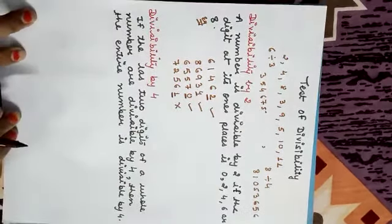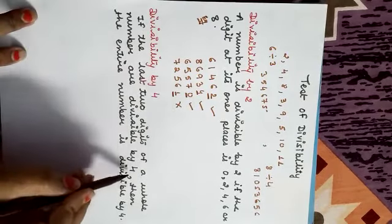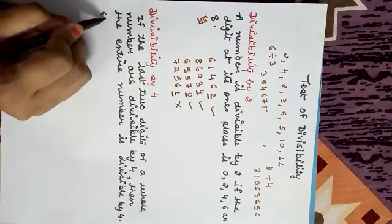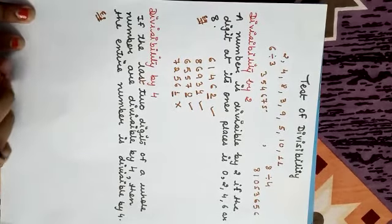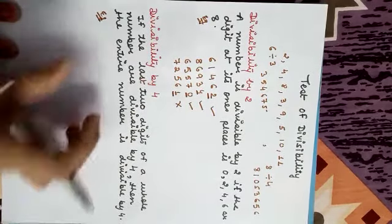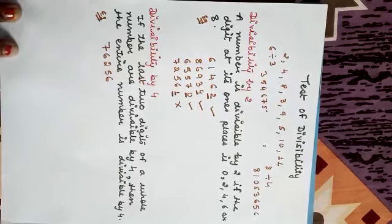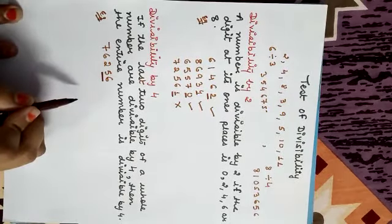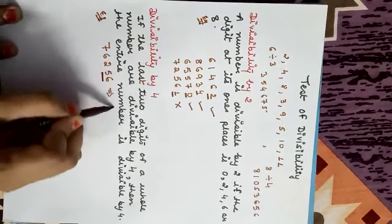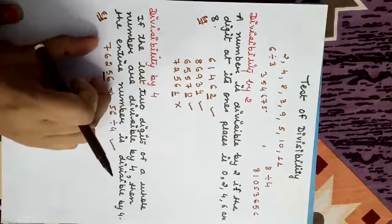Divisibility by 4: If the last two digits of a whole number are divisible by 4, then the entire number is divisible by 4. For example, 76,256: the last two digits are 56. Is 56 divisible by 4? Yes, 56 divided by 4 is 14. So the complete number is divisible by 4.